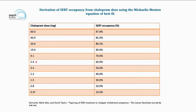Looking at SERT occupancy for citalopram: at 60 mg, SERT occupancy is 87.8%. Coming down to approximately 10 mg (9.1 mg), occupancy is 70% — about a 17.8% decrease. At 5.4 mg, occupancy is 60%, but at zero dose it's only 10% — nearly a 50% reduction. This is the hyperbolic dose-response curve that must be taken into account when considering antidepressant dose reduction.